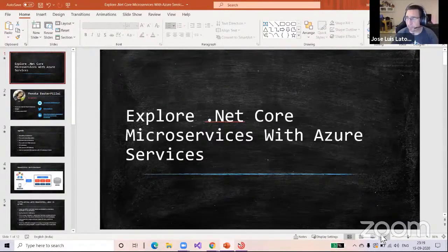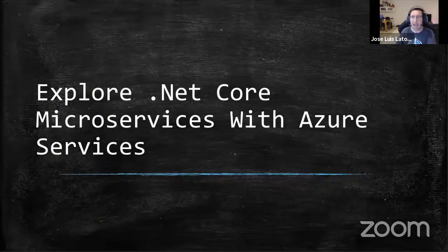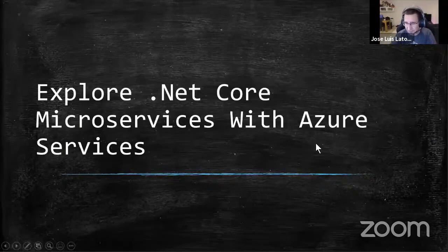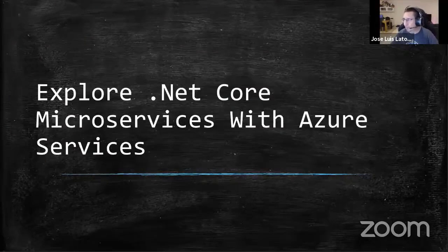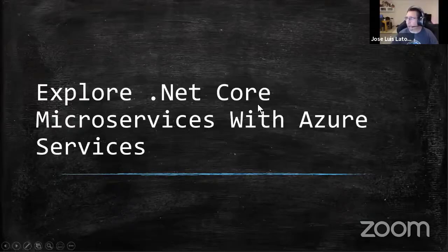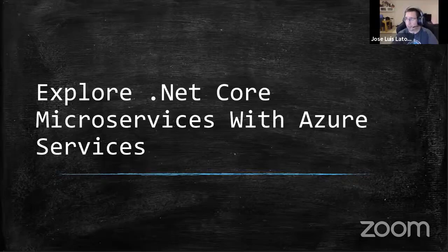Menaka was an Associate Software Engineer at Accenture and also a Microsoft Student Partner — a role Microsoft gives to highly active students. That means you are basically like a Microsoft MVP in activity as a student. She is also a Mozilla Firefox Student Ambassador. Today, Menaka is going to talk with us regarding .NET Core Microservices. The talk is named 'Explore .NET Microservices with Azure Services.'